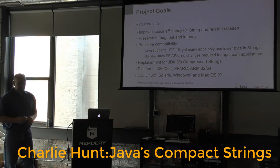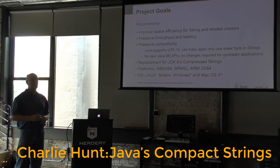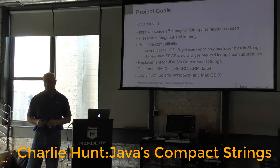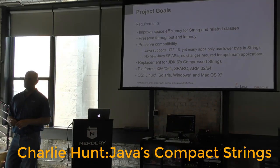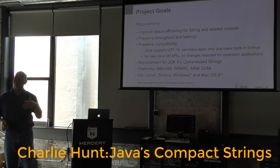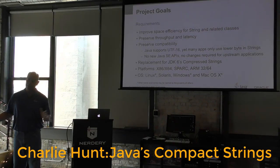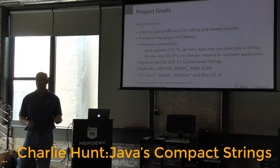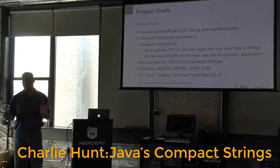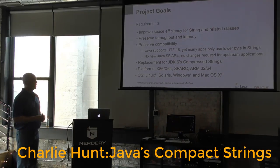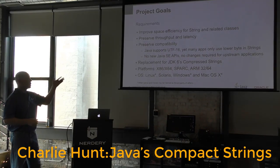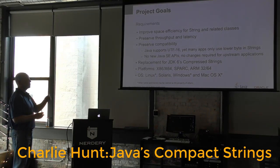In JDK 6 there was a feature called Compressed Strings. It was largely implemented to improve benchmark performance, but it was an all-or-nothing capability — you were declaring that your app only ever uses single-byte characters. If something tried to allocate a multibyte character, the application would probably break or crash. That wasn't a good alternative, so part of the motivation here was to have a proper implementation that could replace Compressed Strings.